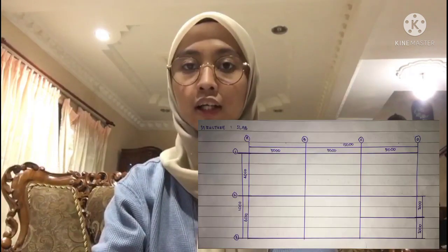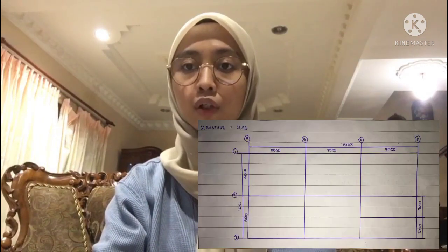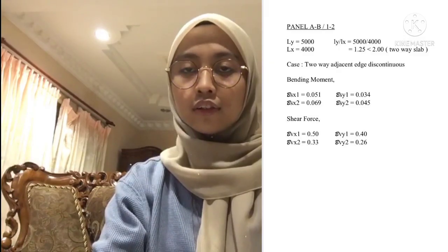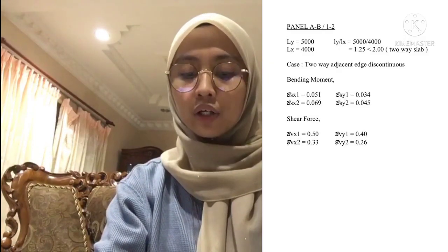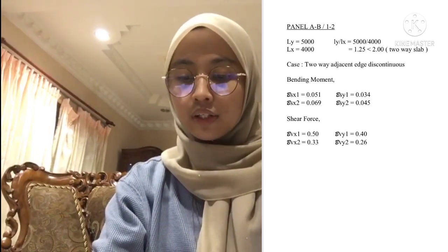My name is Farah Omira Bintimustari, my matrix number is 07DKA1882012. I will present about structural slab design. First, we look at the plan and determine the panel to calculate — for example, panel AB12. The value of LY is 5,000 and LX is 4,000. LY divided by LX equals 1.25, which is less than 2.00, so it is a two-way slab.